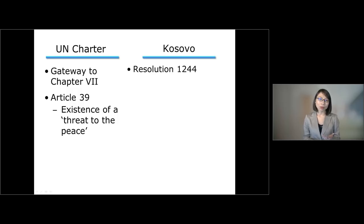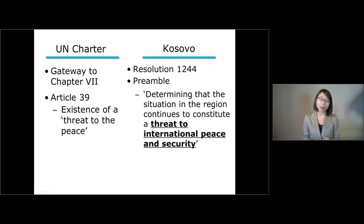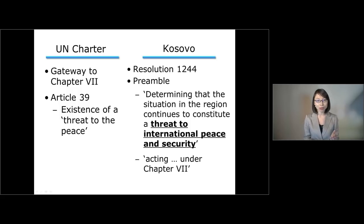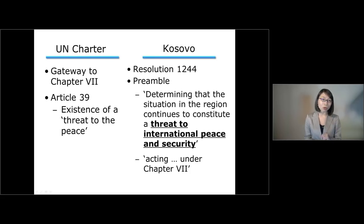In the case of Kosovo, under Resolution 1244, the Security Council first of all determined the existence of the threat by saying that the situation in the region continued to constitute a threat to international peace and security. This determination of the threat opened the door to a wide range of measures taken by the Security Council under Chapter 7, including, in this case, the establishment of KFO, Kosovo force, and the creation of ANMIC.